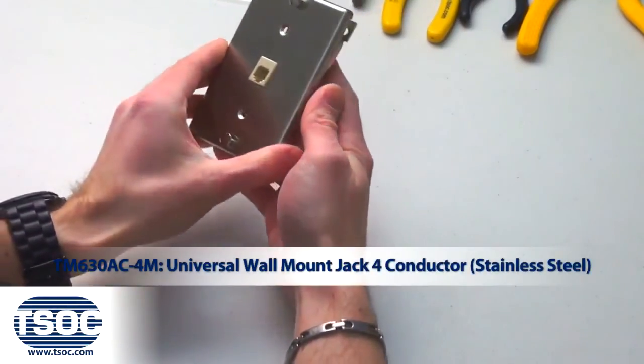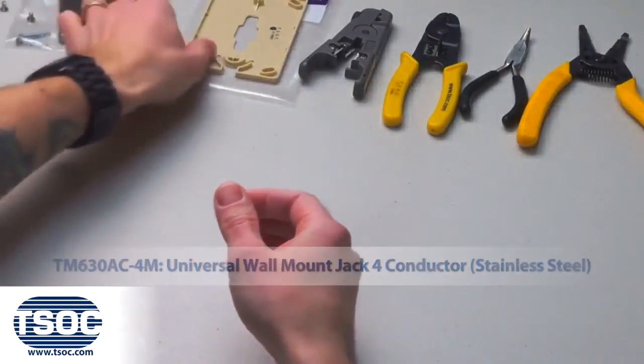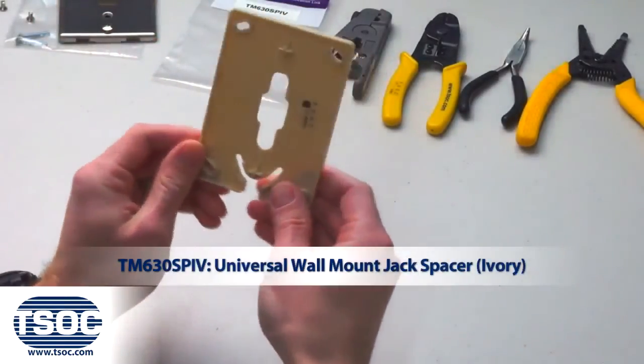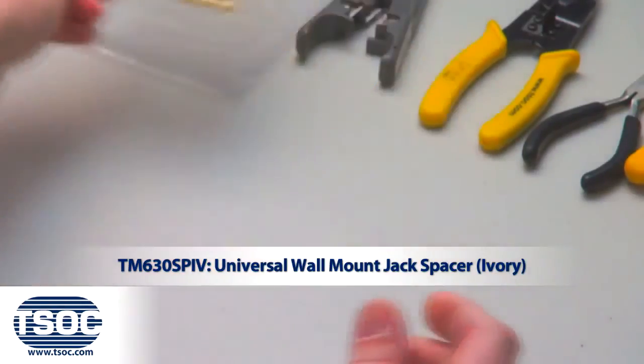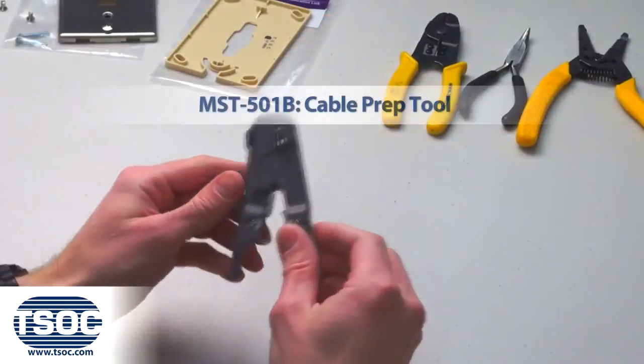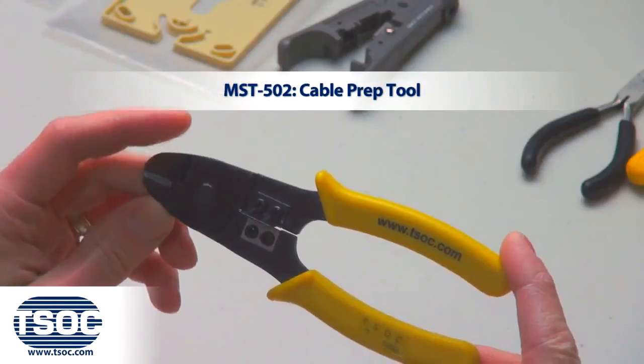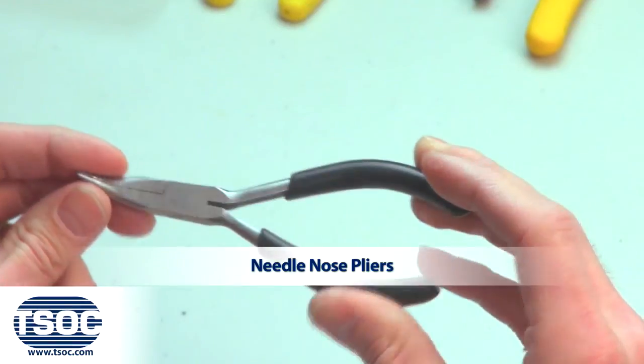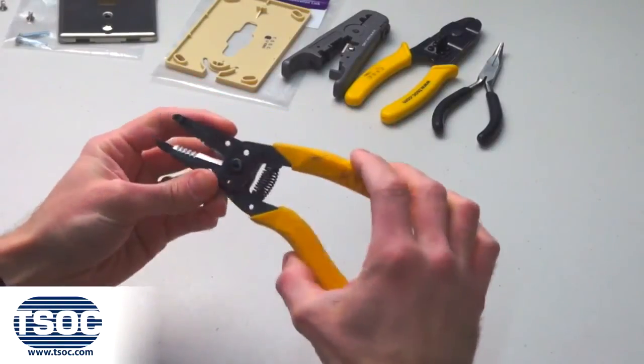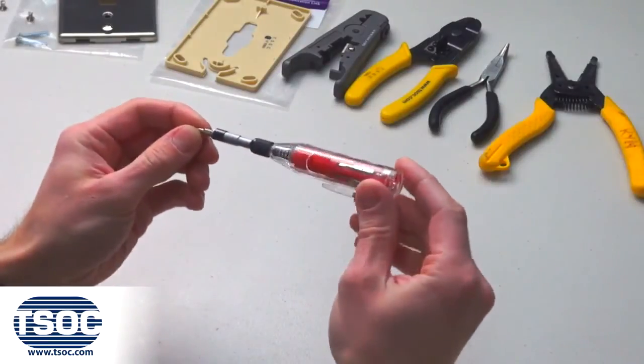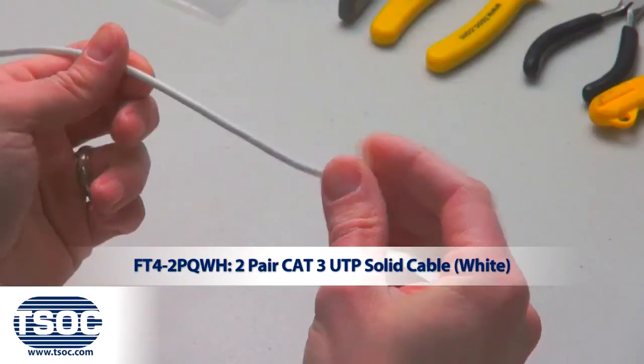Materials Required: Universal Wall Mount Jack 4 Conductor, Universal Wall Mount Jack Spacer, Cable Prep Tool, Needlenose Pliers, Wire Stripper, Screwdriver Robertson Yellow, and Two-Pair Cat 3 UTP Solid Cable (White).